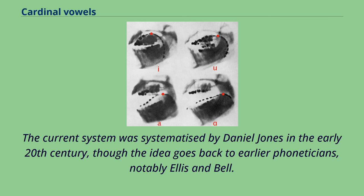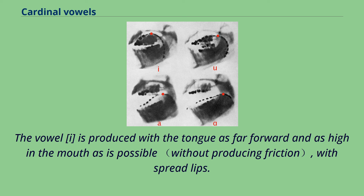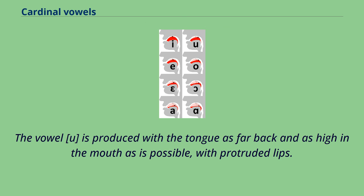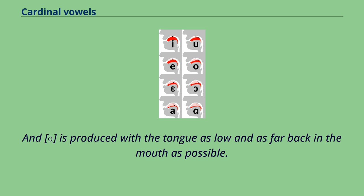The current system was systematized by Daniel Jones in the early 20th century, though the idea goes back to earlier phoneticians, notably Ellison Bell. Three of the cardinal vowels — i, a, and u — have articulatory definitions. The vowel i is produced with the tongue as far forward and as high in the mouth as possible, with spread lips. The vowel u is produced with the tongue as far back and as high in the mouth as possible, with protruded lips.